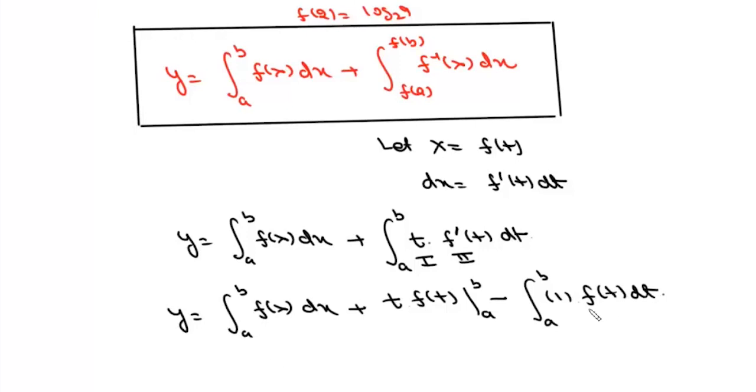Now in definite integrals, if limits are the same and function is the same, value of definite integral is the same. So this integral in x and t, they'll represent the same value, so they'll cancel out.